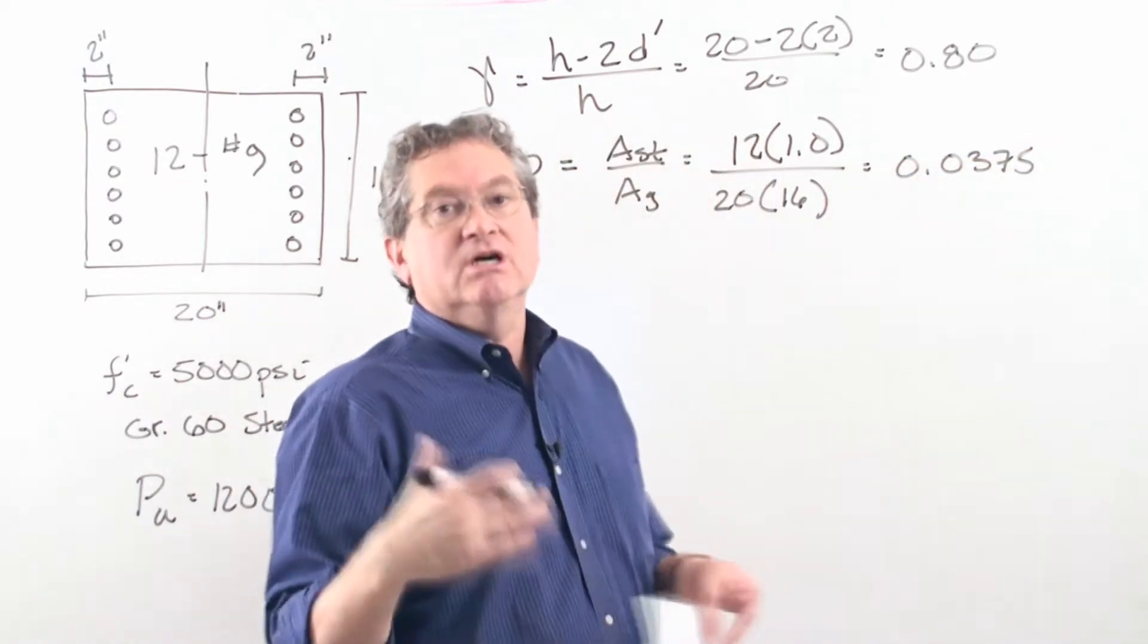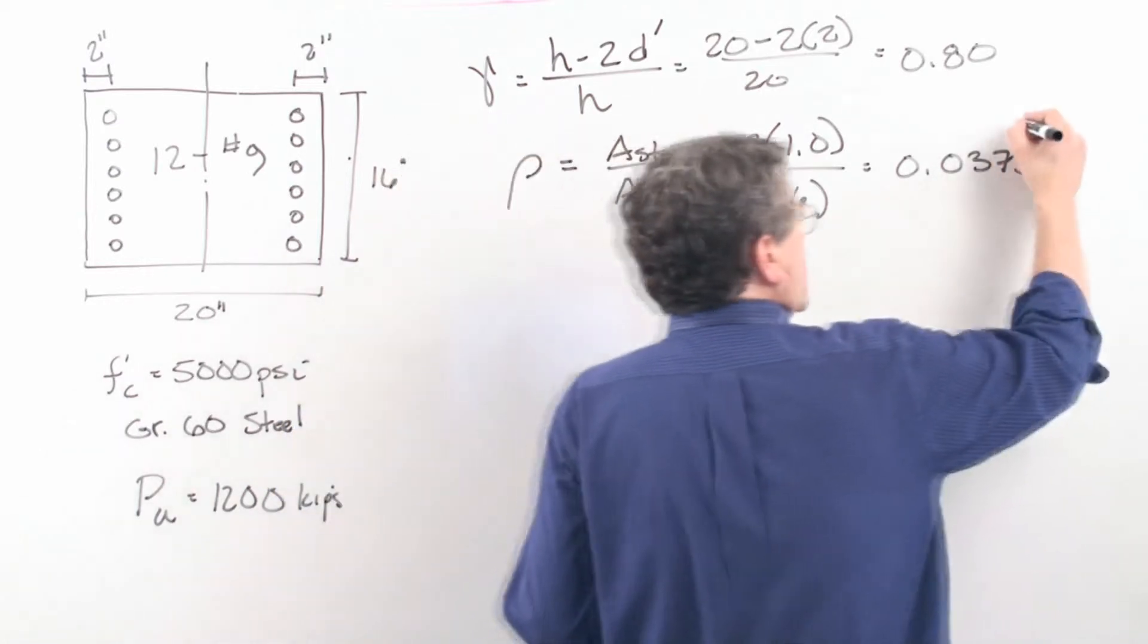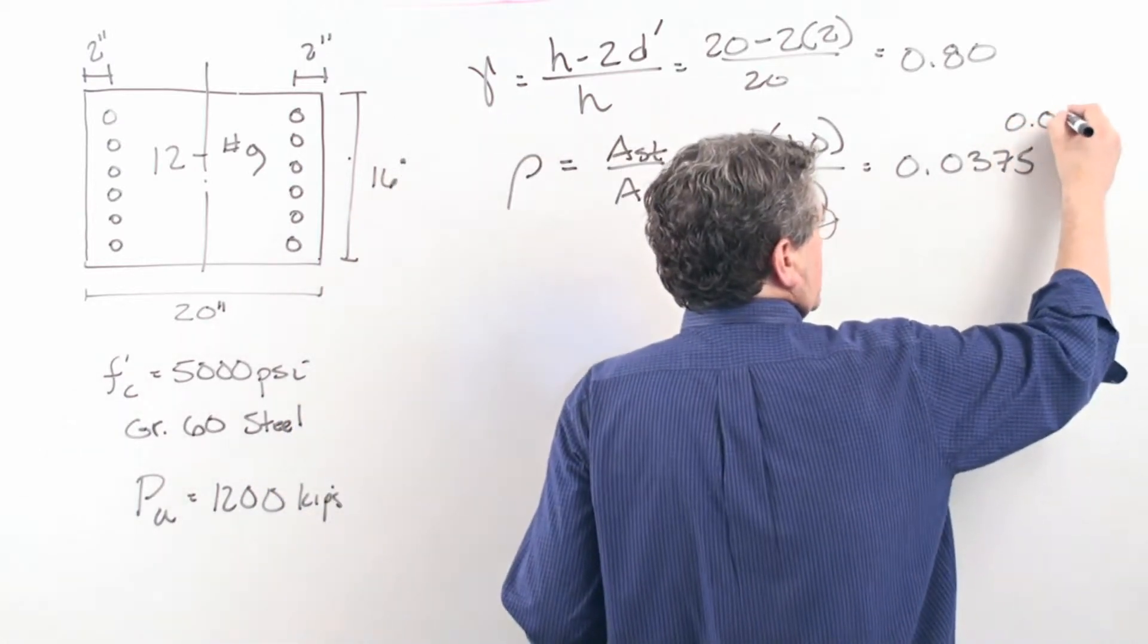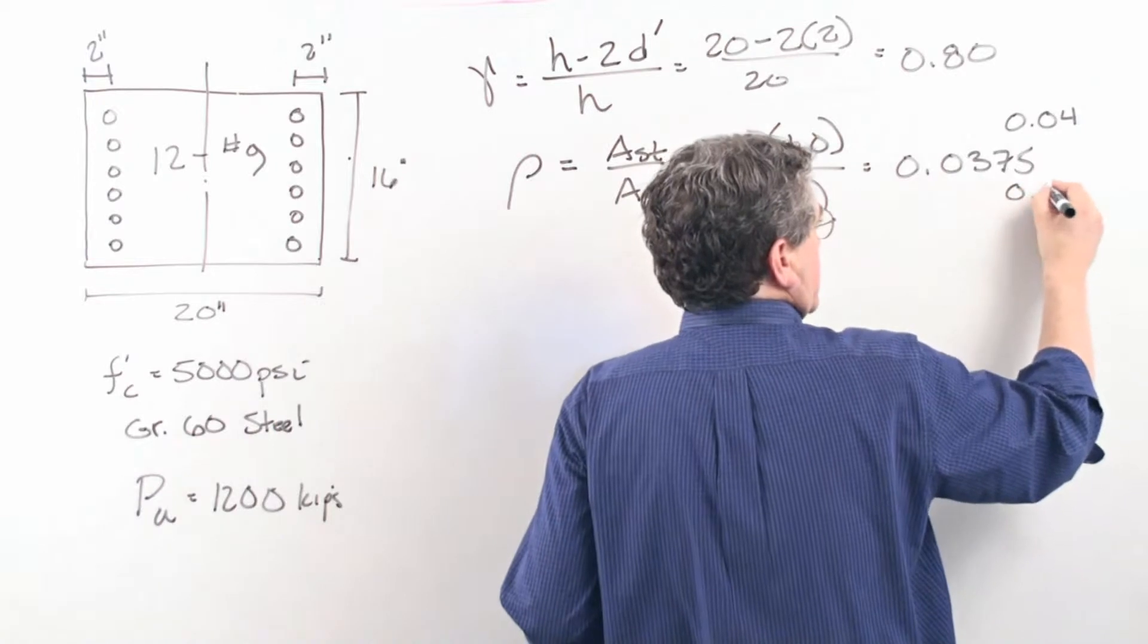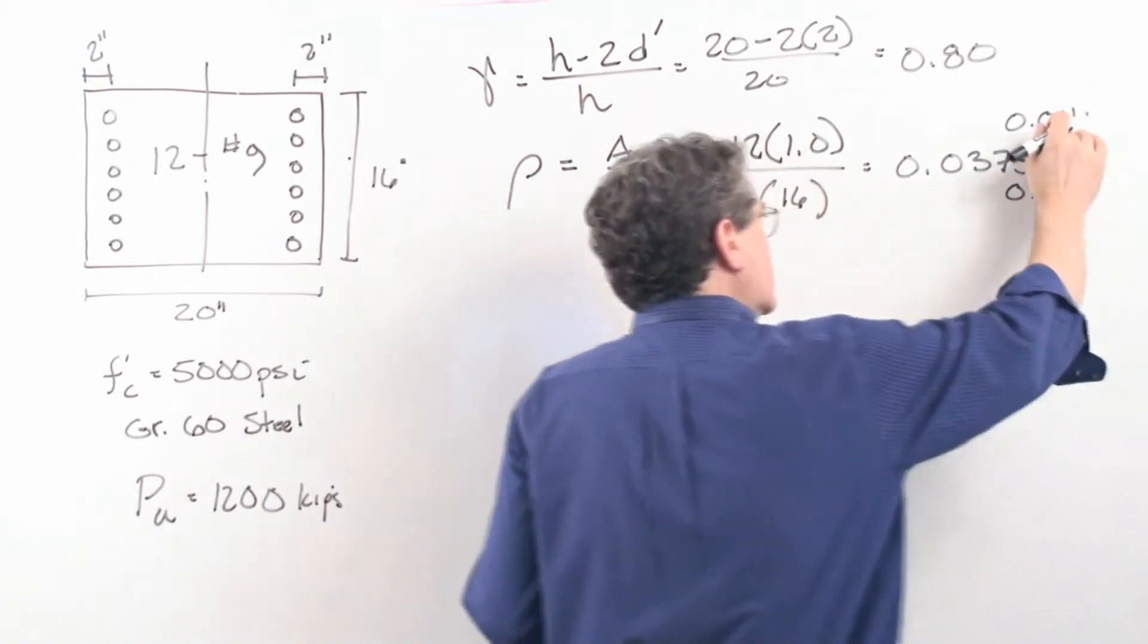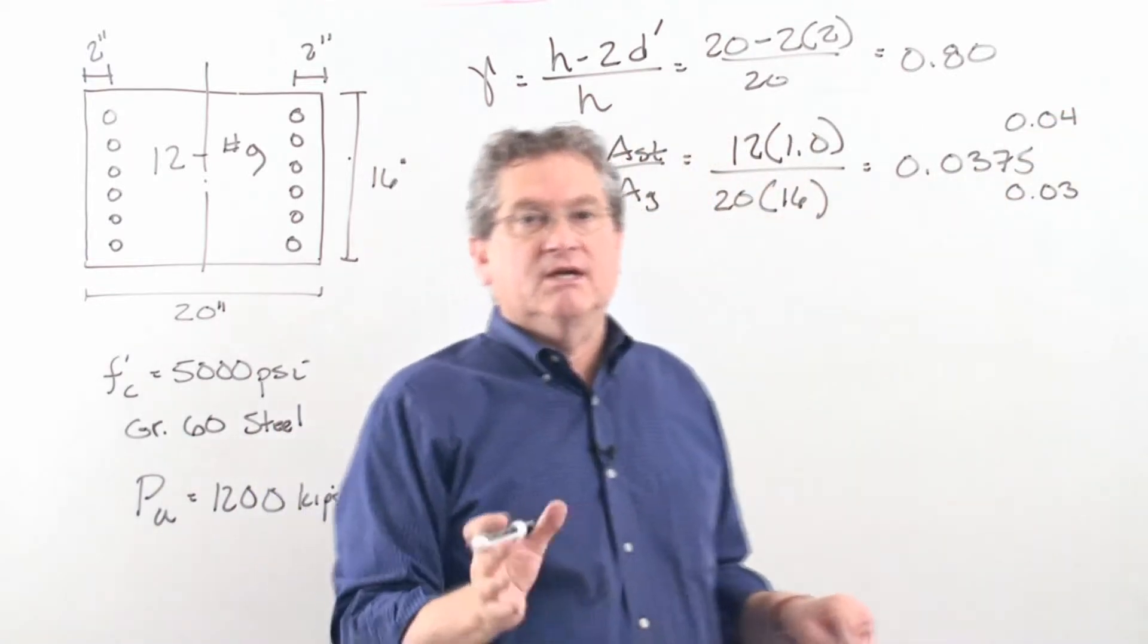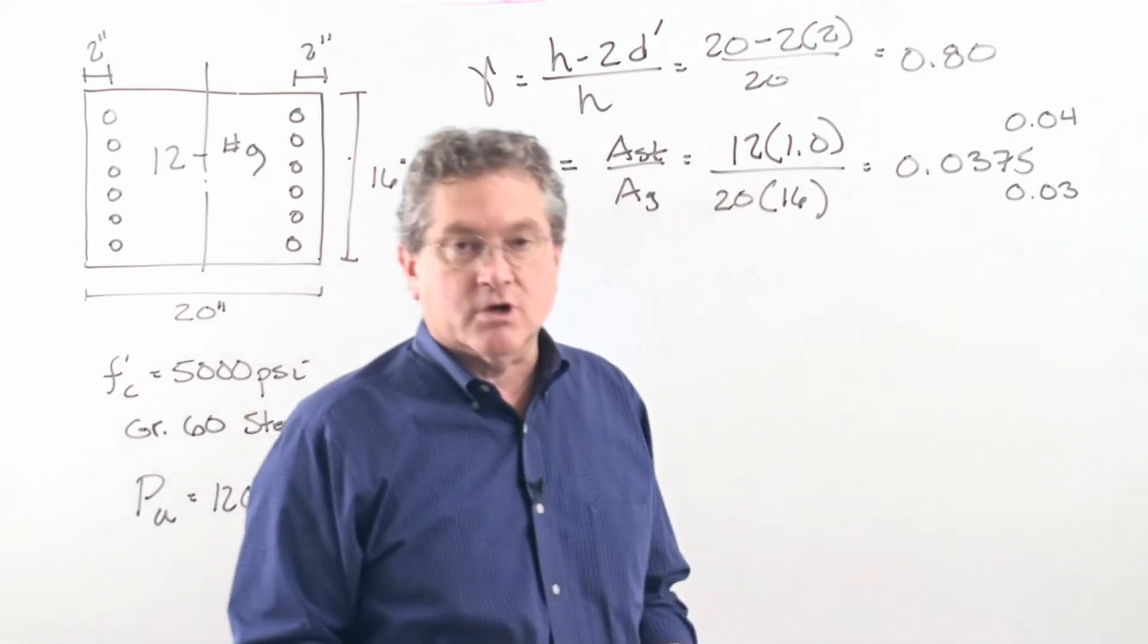And it turns out we're in between two of the curves because there would be one for 0.04 and then 0.03, so we're close to the 0.04, but we'll just have to interpolate, and that's workable.